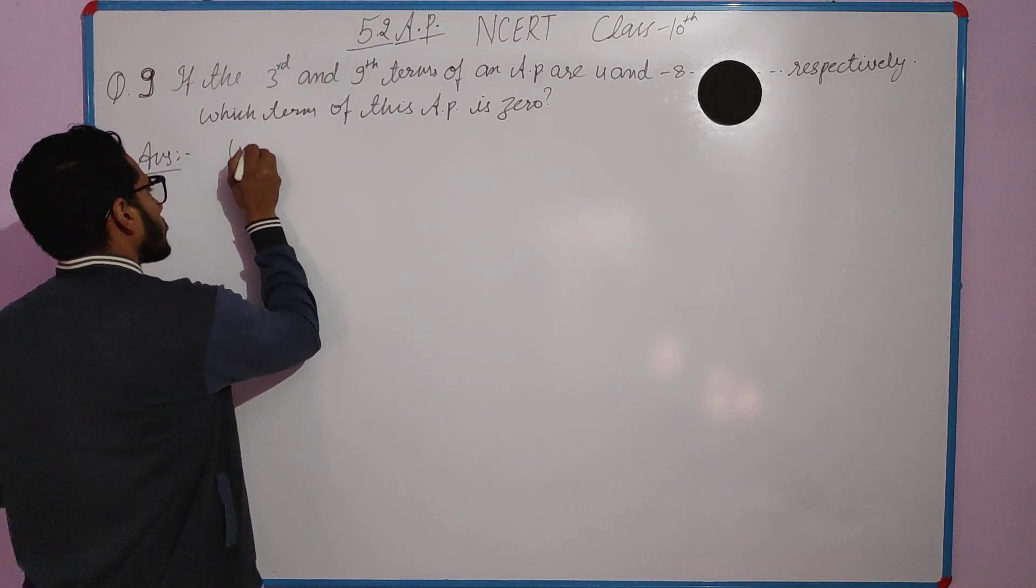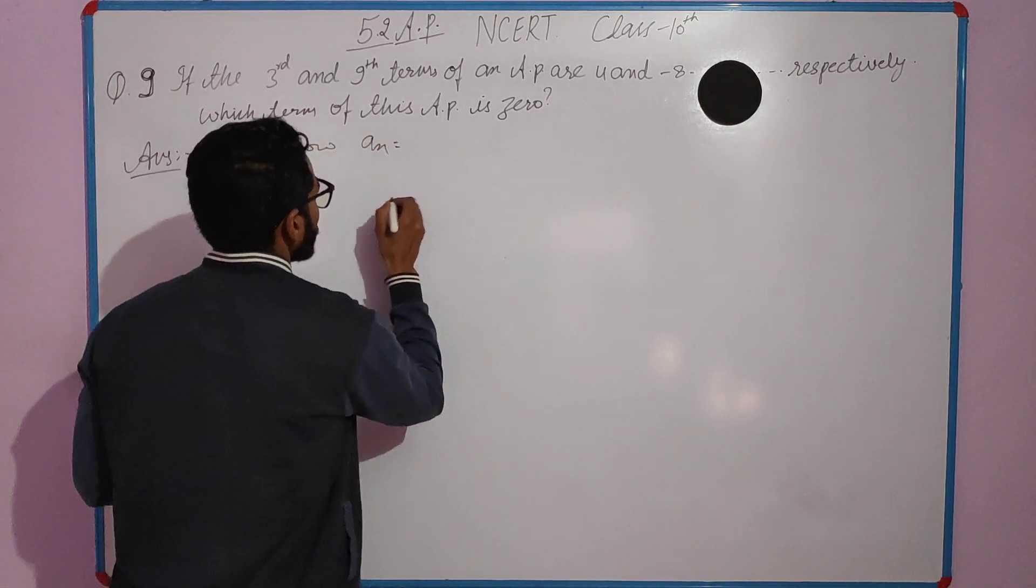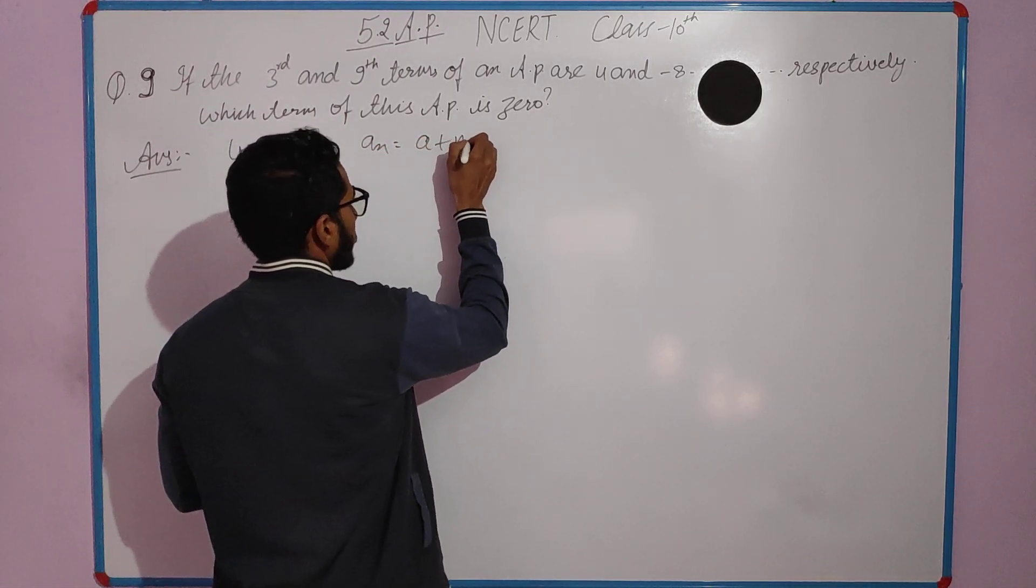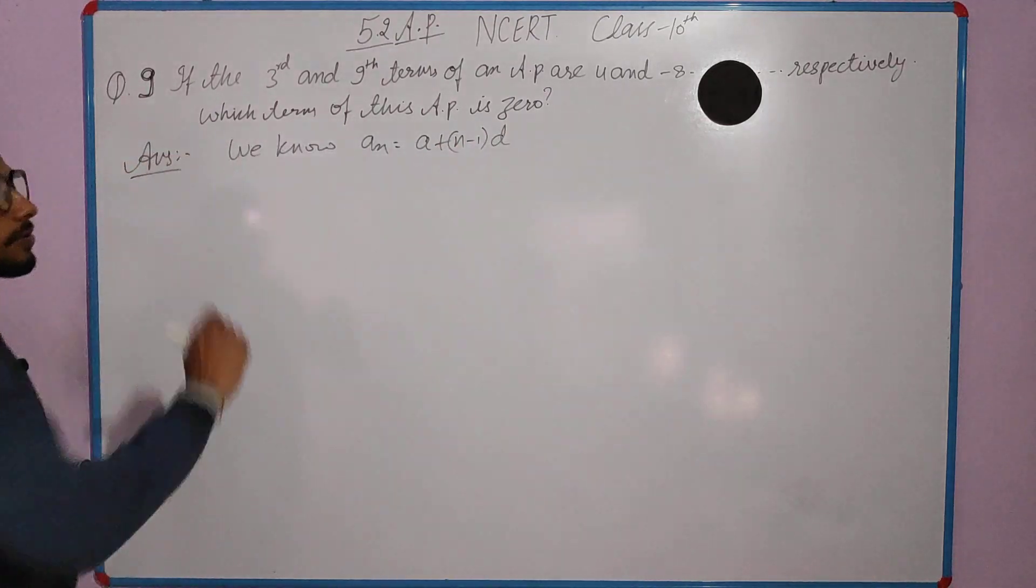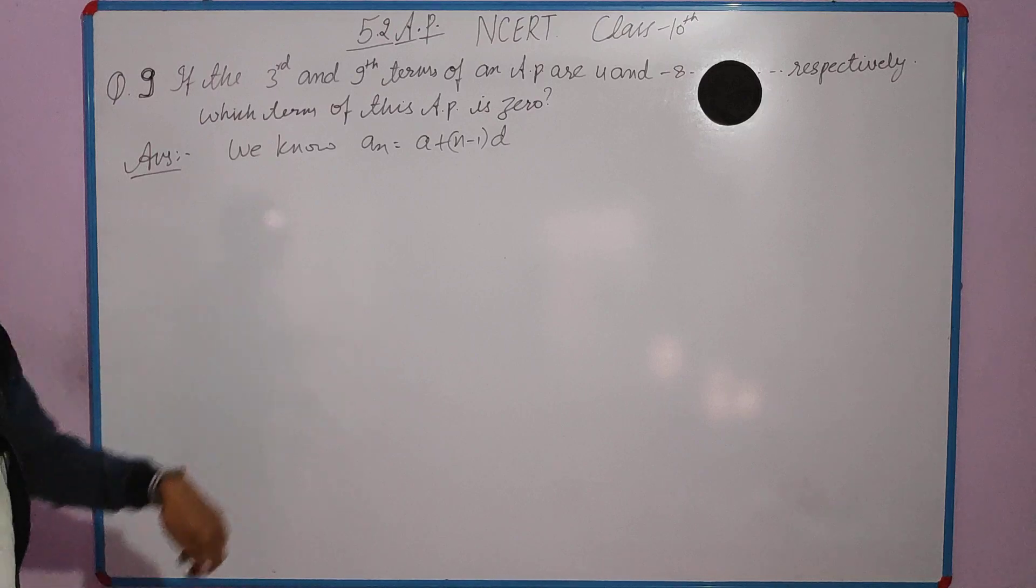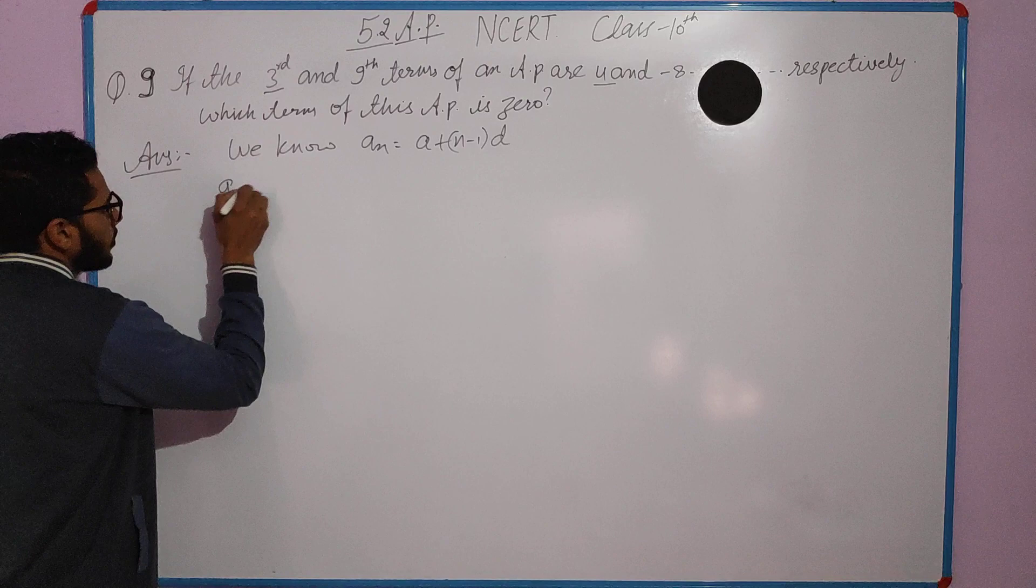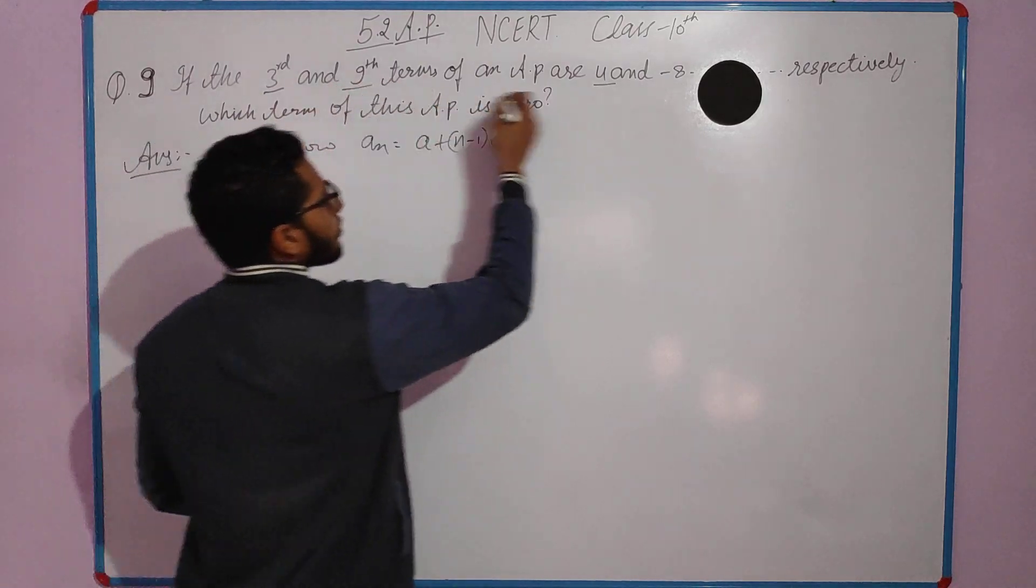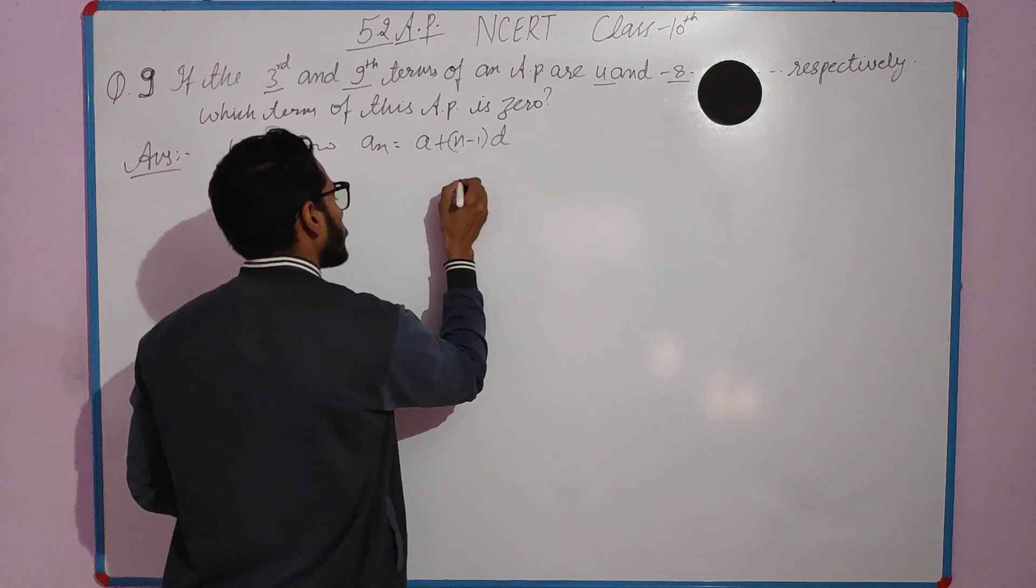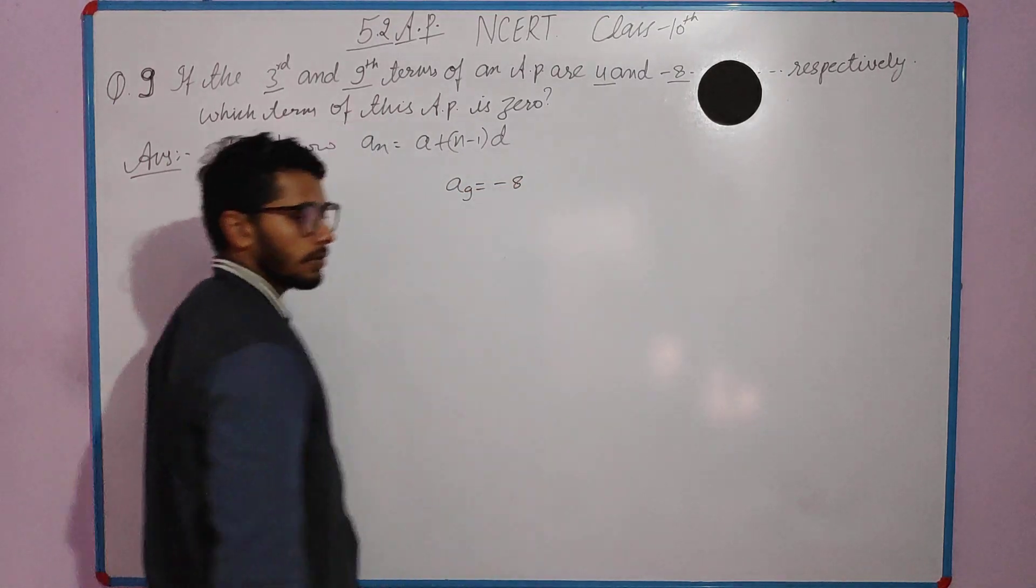Let's begin. We know the nth term formula is a plus n minus 1 into d. In this problem, the 3rd term is given as 4, so I'll write a3 equals 4. The 9th term is given as minus 8, so a9 equals minus 8.